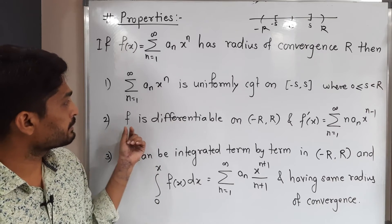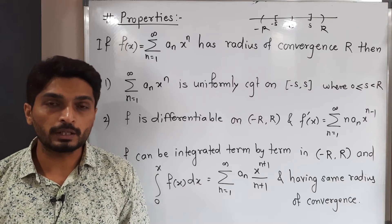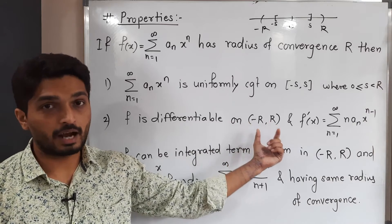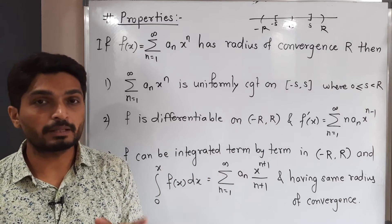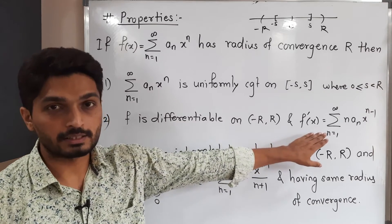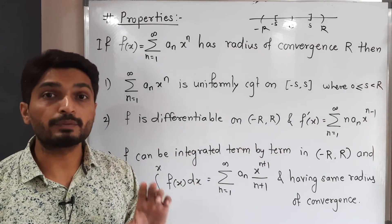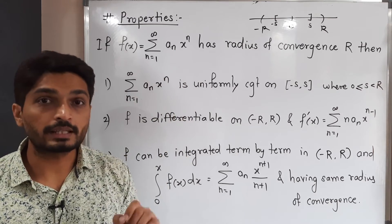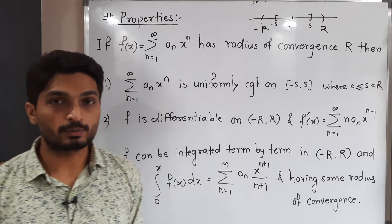The second property is that the function f(x), which equals this power series, is differentiable in the interval of convergence (-R, R), and we can differentiate it term by term. That means the derivative and summation signs can be interchanged. The derivative f'(x) is obtained by differentiating each term: since n is a constant, the derivative of x raised to n is n times x raised to n minus 1.